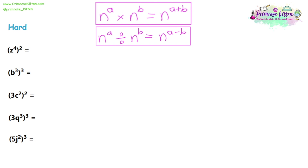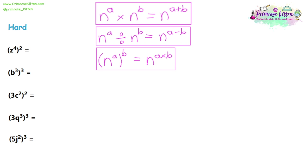Moving on to the hard questions. We've got another rule of indices involving brackets: if we have a base number to a power inside brackets, and that's raised to a second power outside the brackets, that is the same as multiplying those powers together. Looking at question 1, the base is Z. We've got power 4 and power 2, so we multiply them: 4 times 2 is 8. The answer is Z to the power of 8.